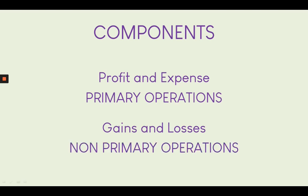Primary operations refer to the business's bread and butter. If the business is focused on merchandising or retailing, all profits and expenses associated with those activities are your primary profits and expenses. However, when secondary operations occur — such as a sale of properties or lawsuits — things not in the mix of retailing and merchandising, we classify those as gains and losses, while the primary ones are classified as profit and expense.